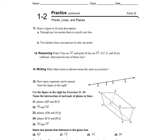Now we want to draw a figure to fit each description. Through any two points, there is exactly one line. So if I draw two points — point A and point B — there's just one line through them. Using a ruler, there's no way to draw any other line through those two points that isn't that same unique line. I'm using arrows at the end because the line continues in both directions.